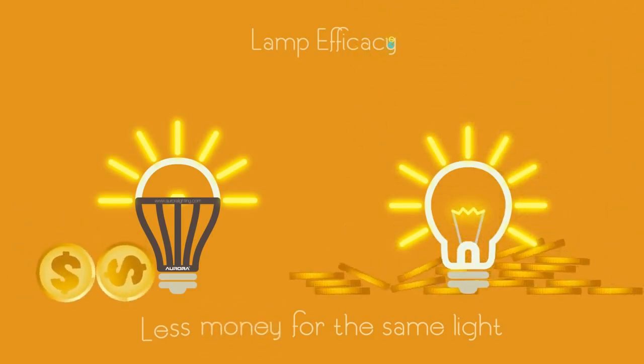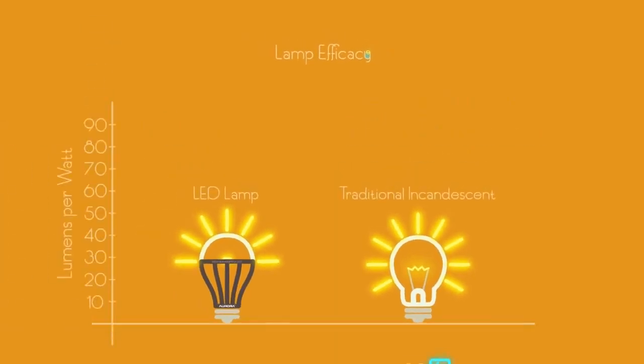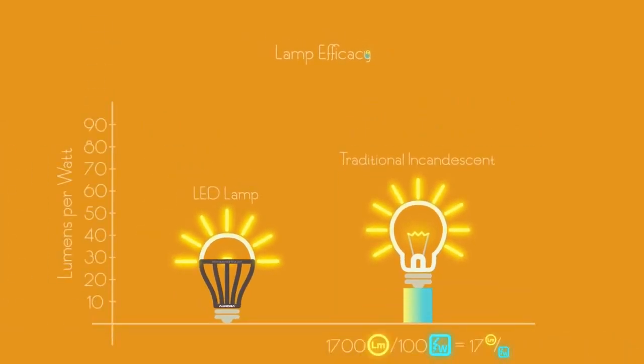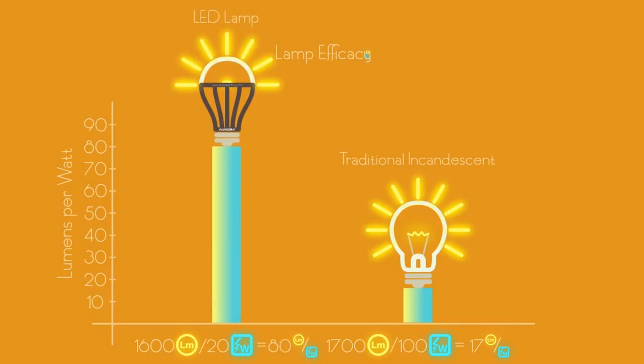For example, a traditional incandescent lamp uses 100 watts to produce 1700 lumens. This lamp emits 17 lumens per watt. On the other hand, an LED lamp consumes 20 watts and produces 1600 lumens. It emits 80 lumens per watt. Now, do you see the difference?